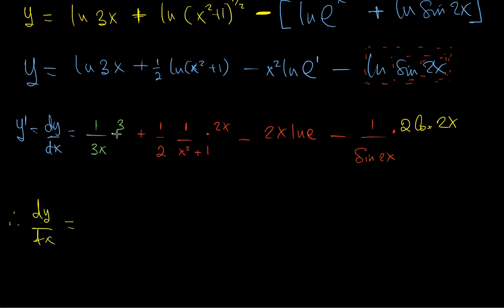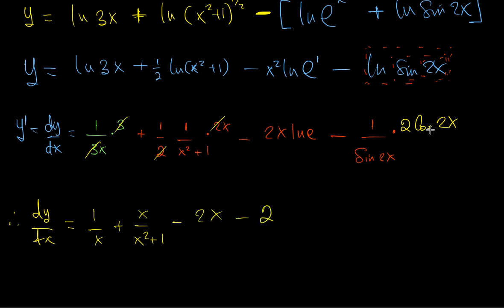Therefore, dy/dx simplifies to: 1/x, plus x/(x² + 1), minus 2x, minus 2·cos(2x)/sin(2x). Cosine over sine of a function is cotangent of that function. So this is our final dy/dx. I hope these videos are helping — you can always contact me and send me problems. The more I see your engagement, the more content I create. See you in the next video, God bless.